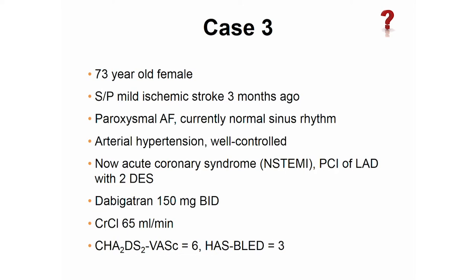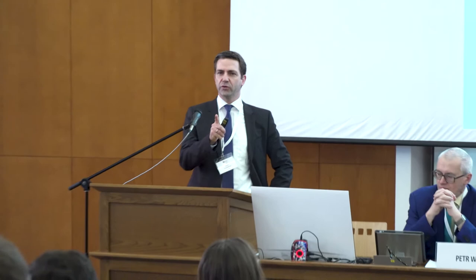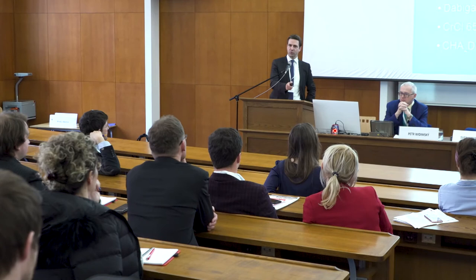Three months later — paroxysmal AFib, sinus rhythm — she has an acute coronary syndrome, a STEMI, gets stented with a drug-eluting stent, and was put on dabigatran 150. So we have a lady with a stroke three months ago, an acute coronary event, and she is on dabigatran 150. What do we do now? You would add one antiplatelet? Or aspirin and clopidogrel and switch to warfarin? It depends.